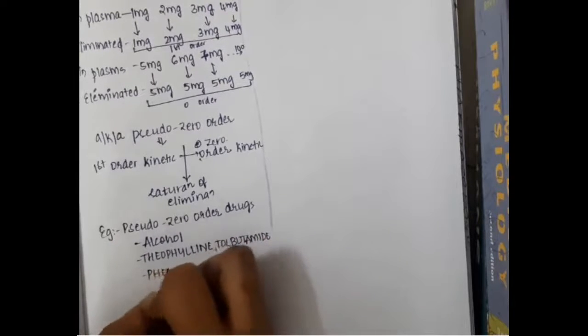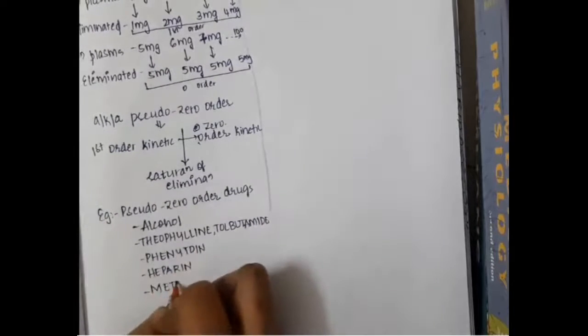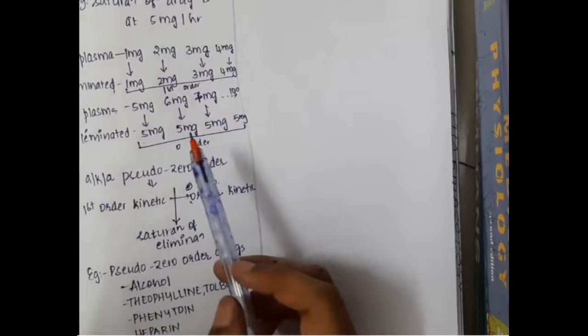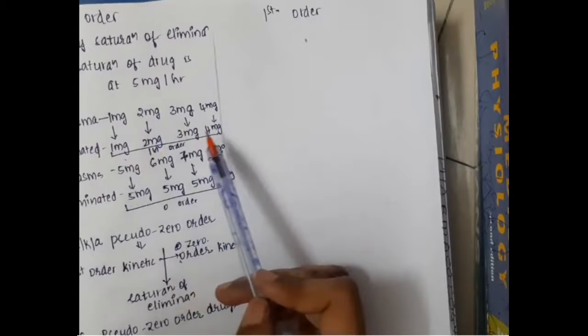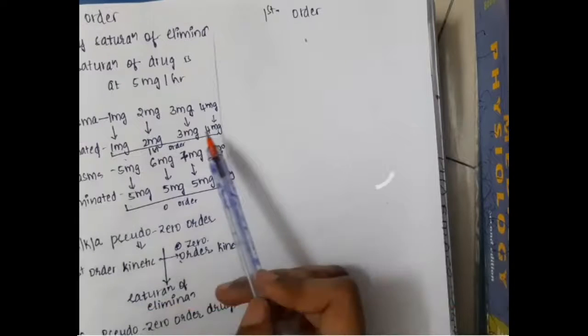Examples of pseudo zero-order drugs include alcohol, theophylline, tolbutamide, phenytoin, heparin, methanol, and warfarin. Because of this pseudo zero-order behavior, these drugs have increased chances of toxicity.